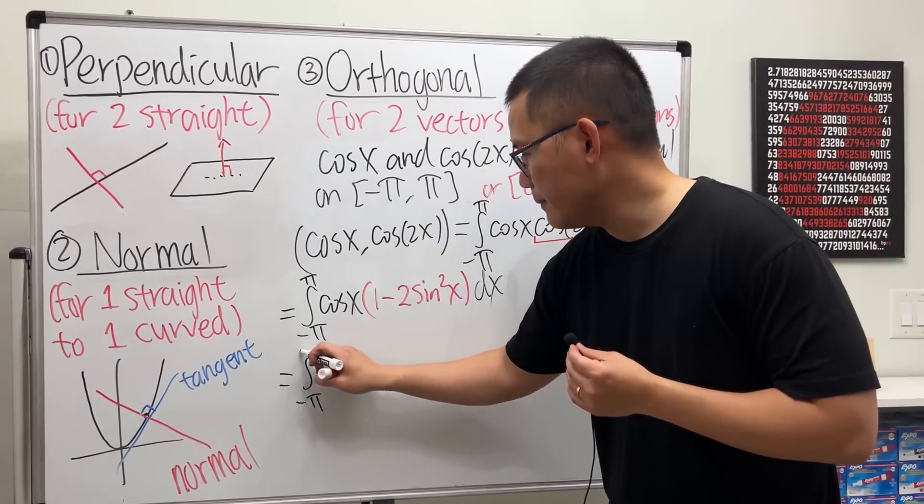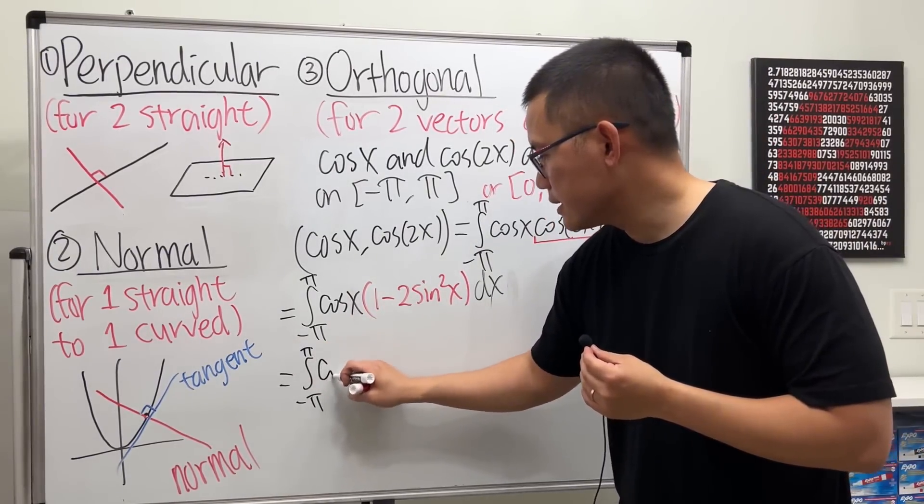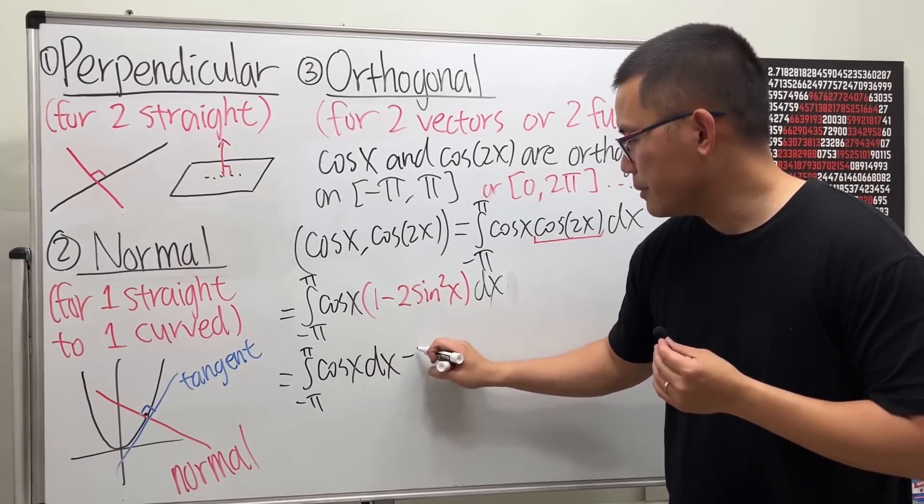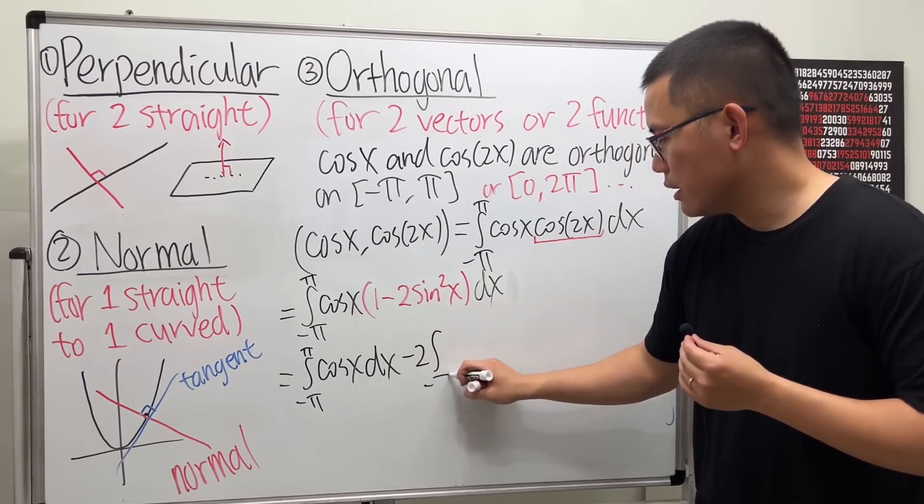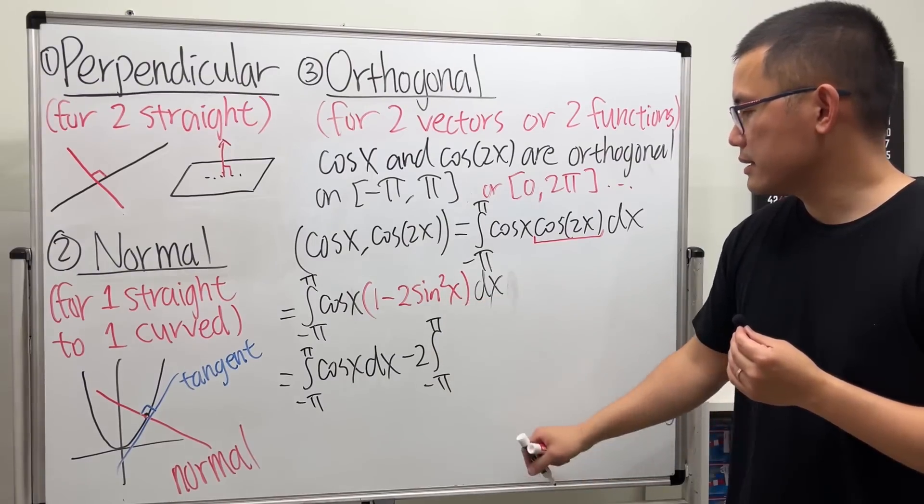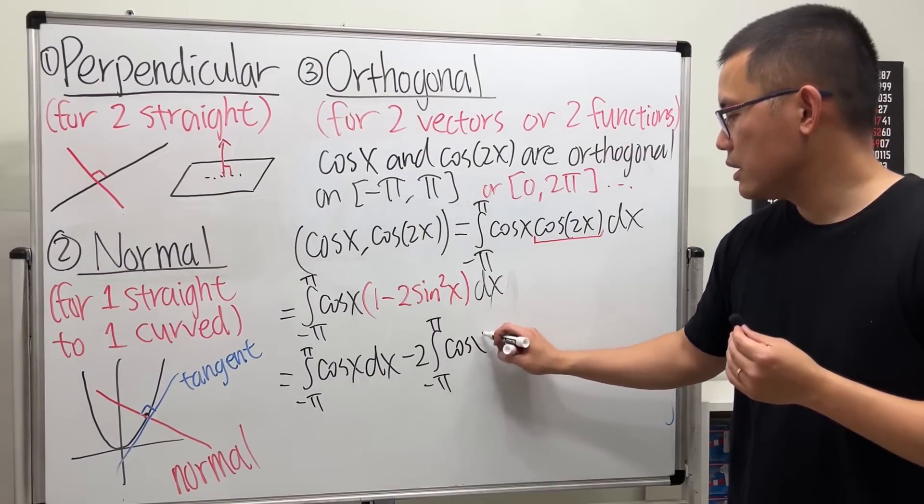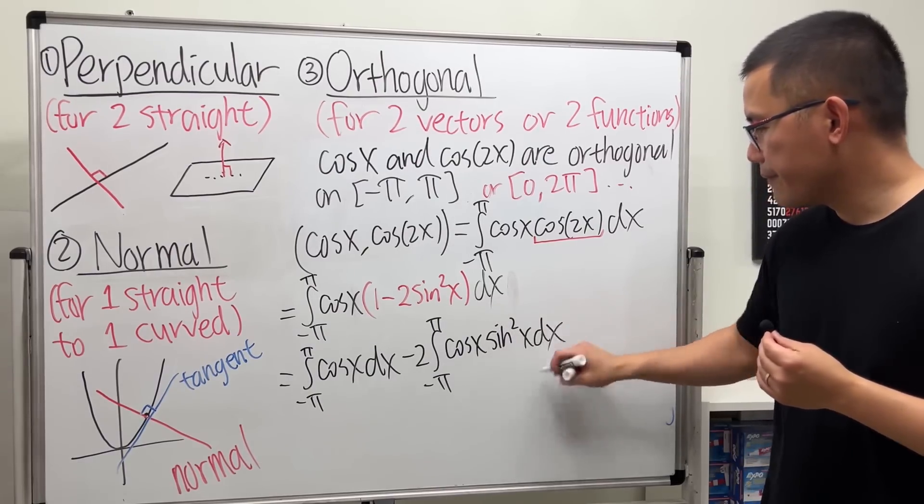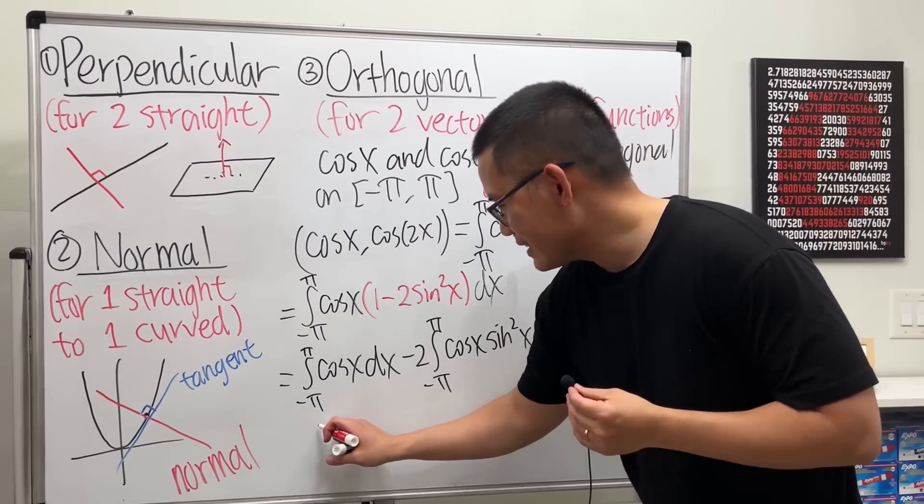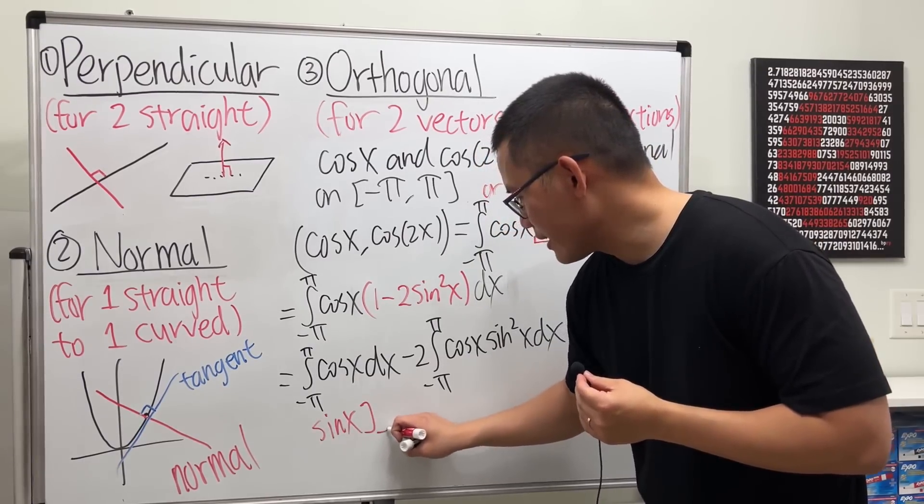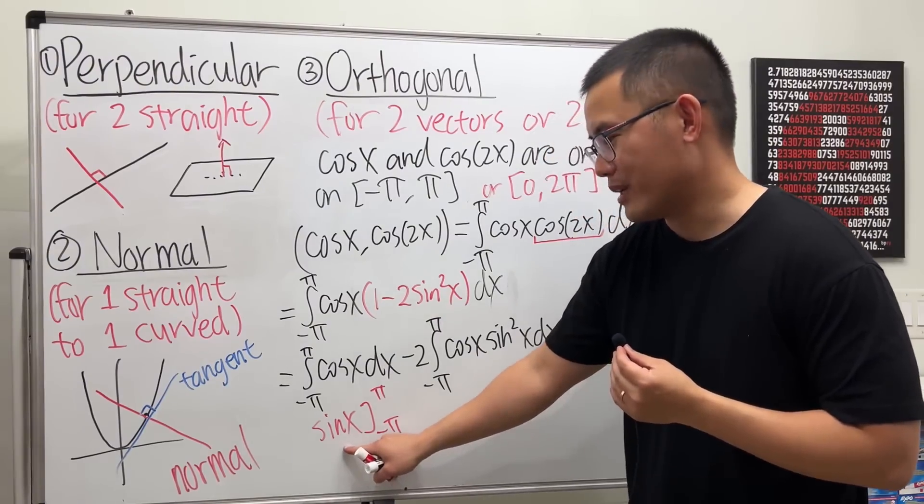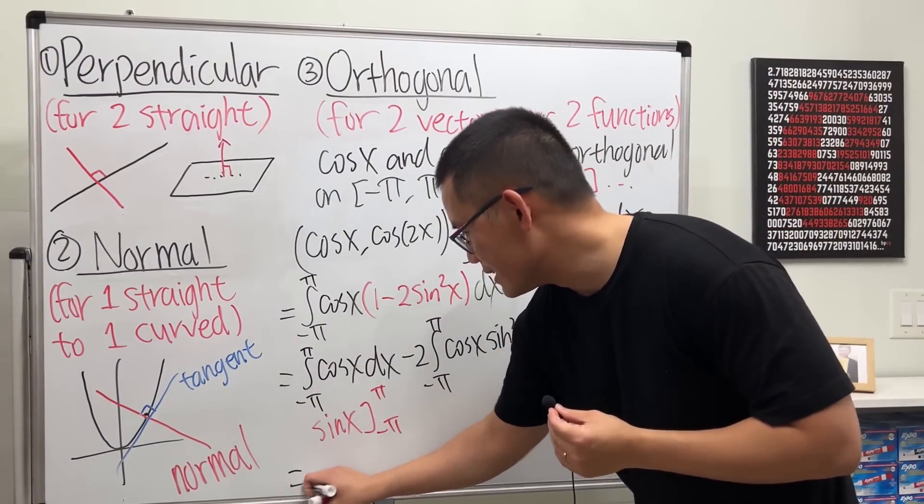So when we distribute it, we get the following. The integral going from -π to π, cos(x), and then let me close that, minus 2, let me just put it on the outside of the integration, from -π to π, and then cos(x) times sin²(x). For this one, you can just integrate it, you get sin(x), and then you go from -π to π. When you put π in here, you get 0, when you put -π in here, you get 0, so the first part, you just get 0.